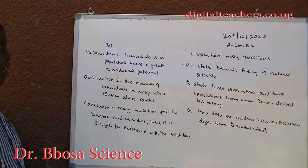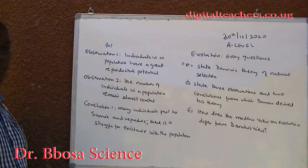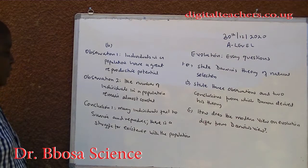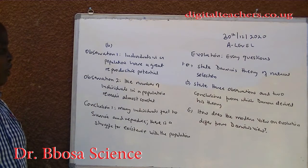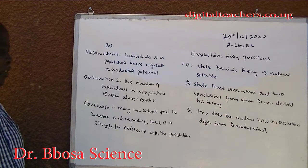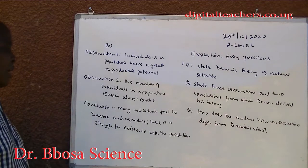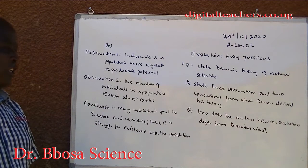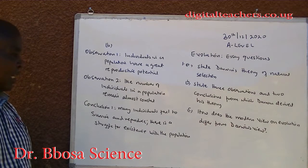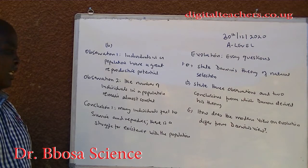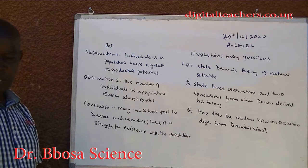Observation 1: Individuals in a population have a great reproductive potential. Observation 2: The number of individuals in a population remains almost constant. Conclusion 1: Many individuals fail to survive and reproduce. Hence, there is a struggle for existence within a population.